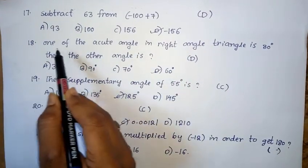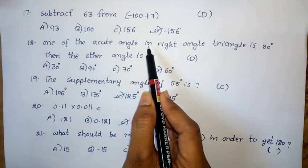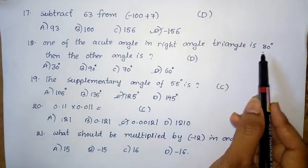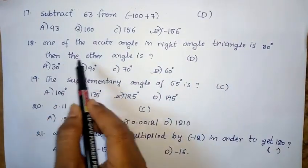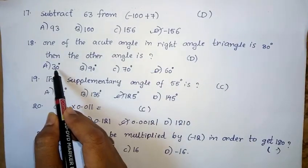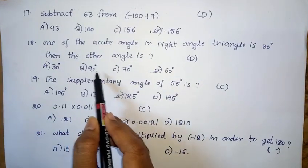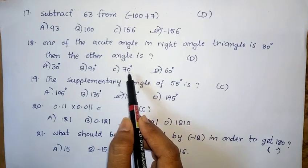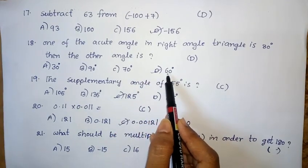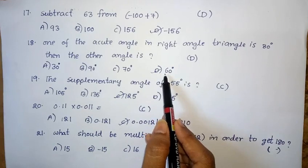Eighteenth question: One of the acute angles in a right angle triangle is 30 degrees. Then the other angle is — Option A: 30 degrees. Option B: 90 degrees. Option C: 70 degrees. Option D: 60 degrees. Option D — 60 degrees — is the right answer.